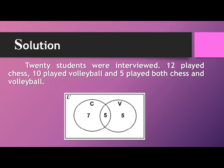So we have seven students who played chess only, five students who played volleyball only, and five students who played both chess and volleyball. If we add all of them, we have seventeen students. But remember, based on the given, twenty students were interviewed. So where are the other three? They are outside the circles, because they are students who did not play chess or volleyball.